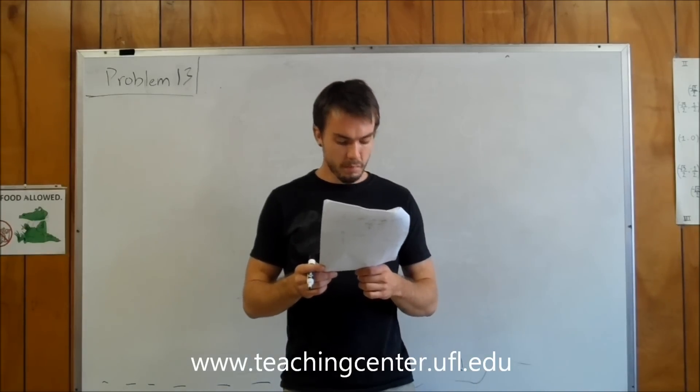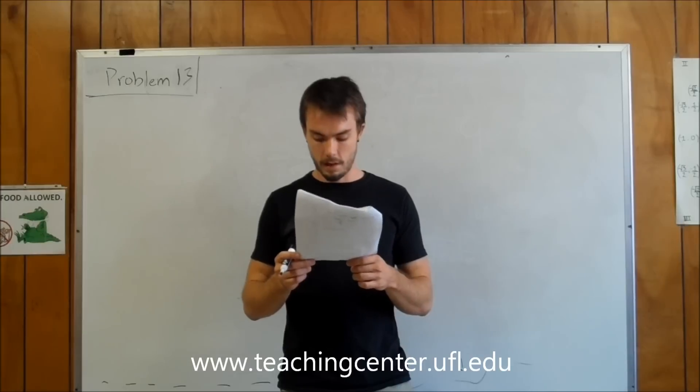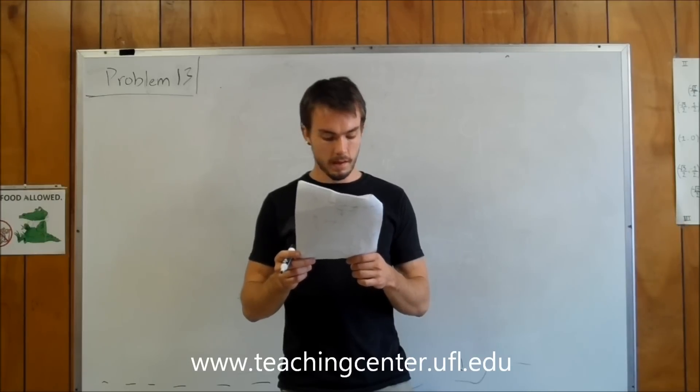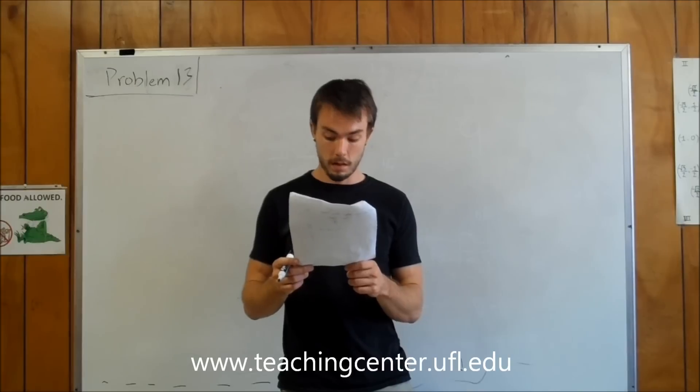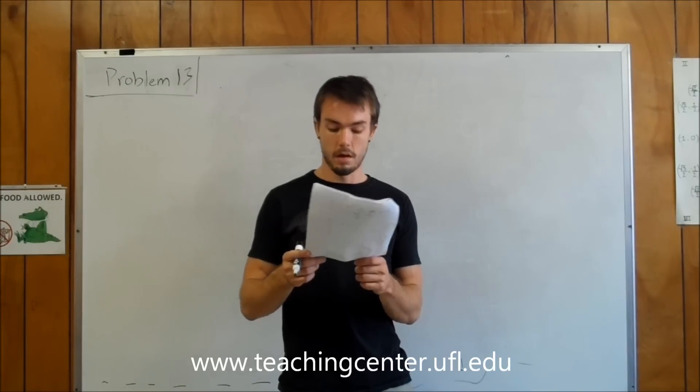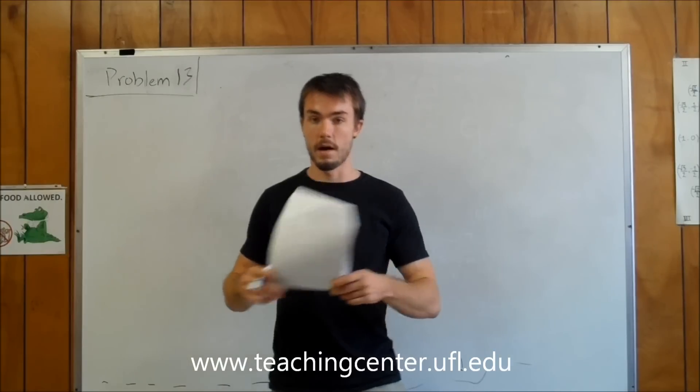Problem 13 states: a uniform loop of length L hangs on a peg a distance L off the ground. Half of the rope is on the left of the peg, half on the right. Someone nudges the rope so that one side is a little longer than the other and it proceeds to slide off the peg with no friction onto the ground. How fast is it going when one end of it hits the ground?